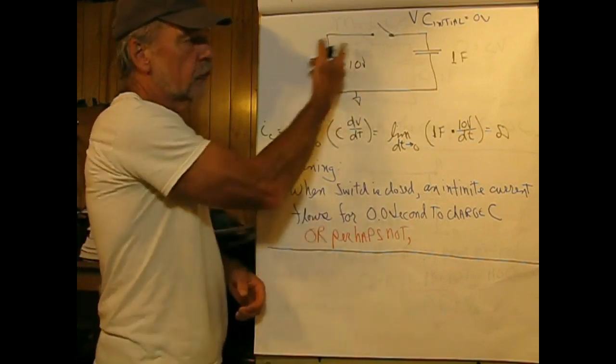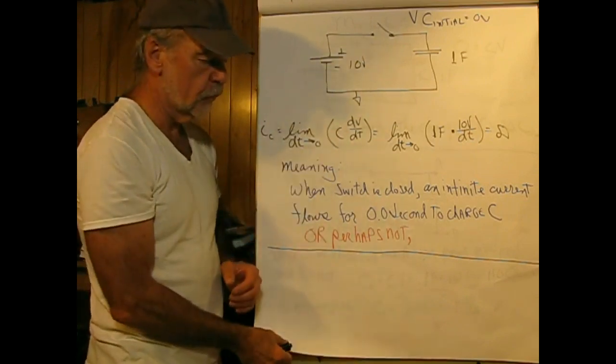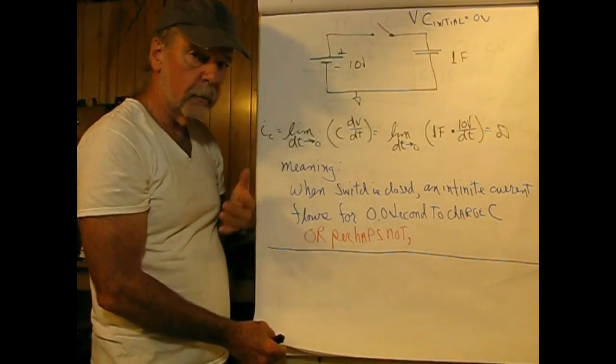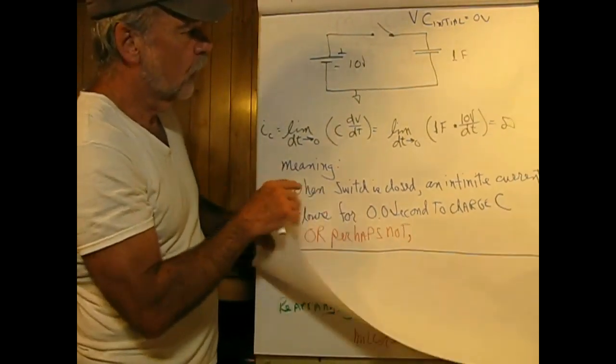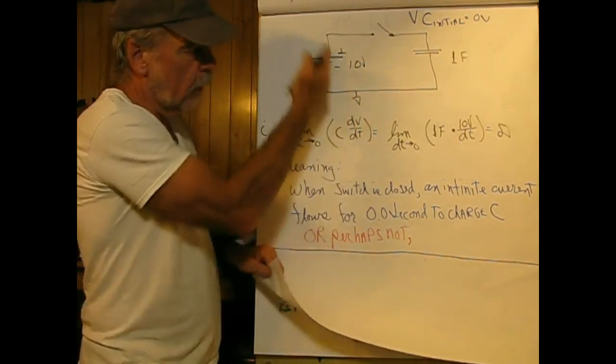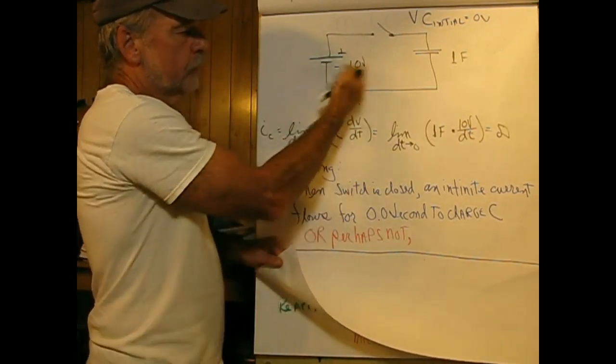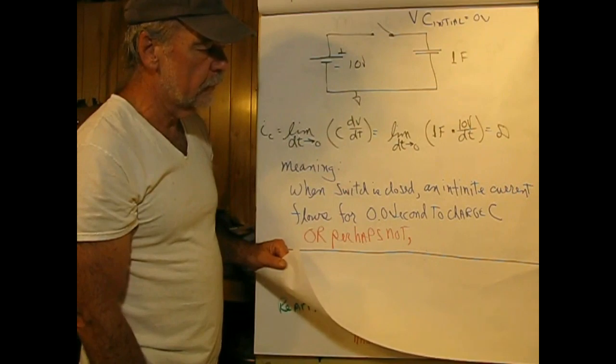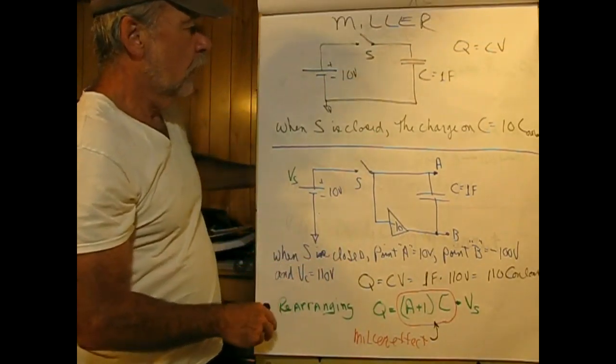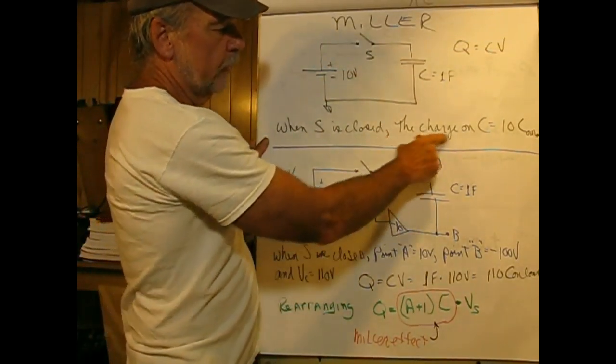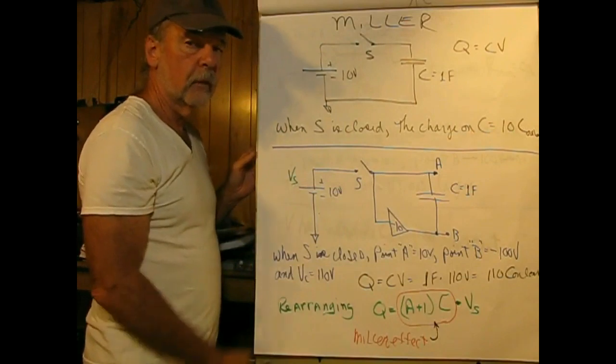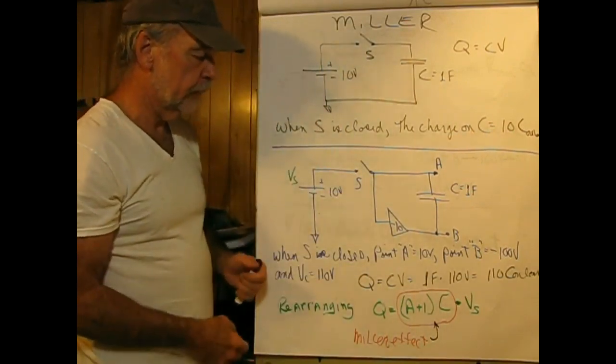What I didn't want to do is present this circuit as if it could really be built. All this stuff with limits has to do with displaying this as a good instruction tool for Miller effect. When the switch is closed, we have a change on C and the total charge is now equal to 10 coulombs.